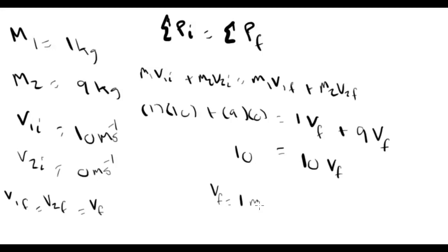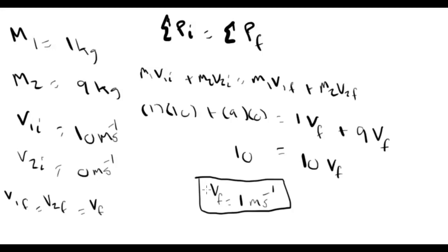VF is 1 meter per second — that is the answer to example 3. For the collision type, we don't need to check kinetic energy because we know from context — the objects stick together — that this is a perfectly inelastic collision.